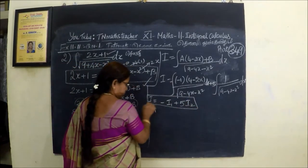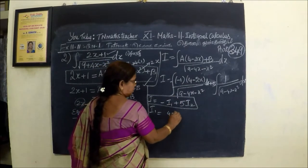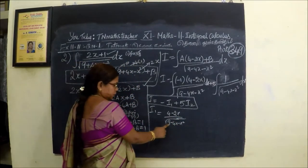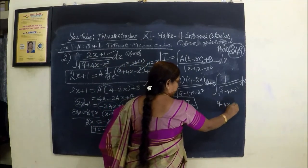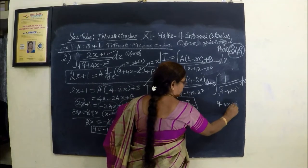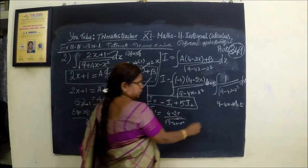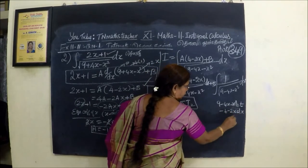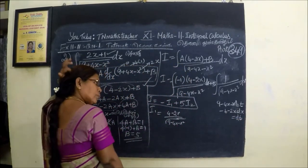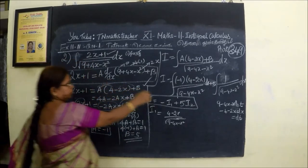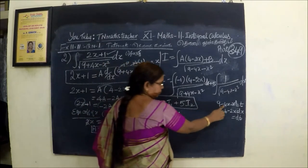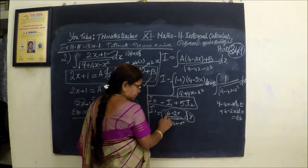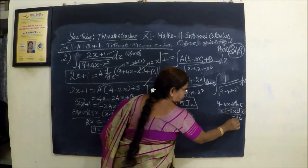First we want to find I1. This is the integral of 4 minus 2x by root of 9 minus 4x minus x squared. Let t equal 9 minus 4x minus x squared. Then 2x dx equals dt. We substitute dt.